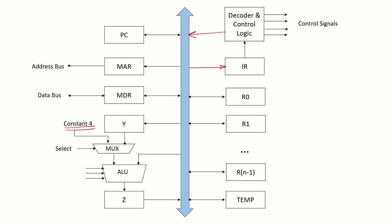The reason for the constant 4 as an input to the multiplexer is that in this system every instruction is 4 bytes in length and the memory is byte addressable. So to increment the PC to point to the next instruction, PC has to be incremented by 4, and that is why the constant 4 is placed there. If the memory were word addressable, the program counter would be updated by one address each time, and a constant of 1 would be used instead.